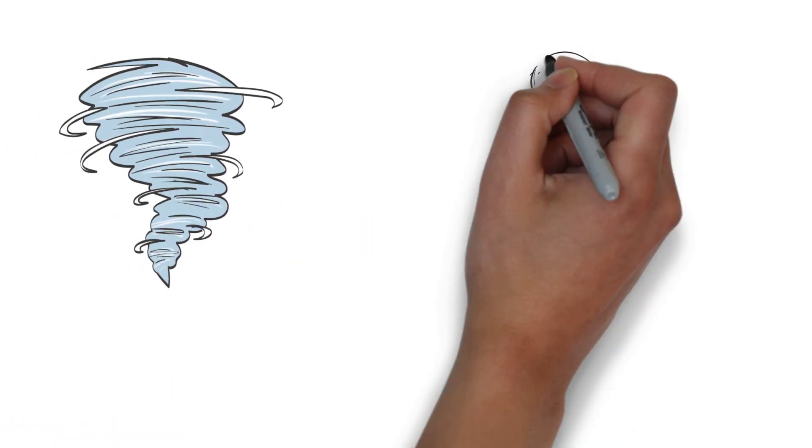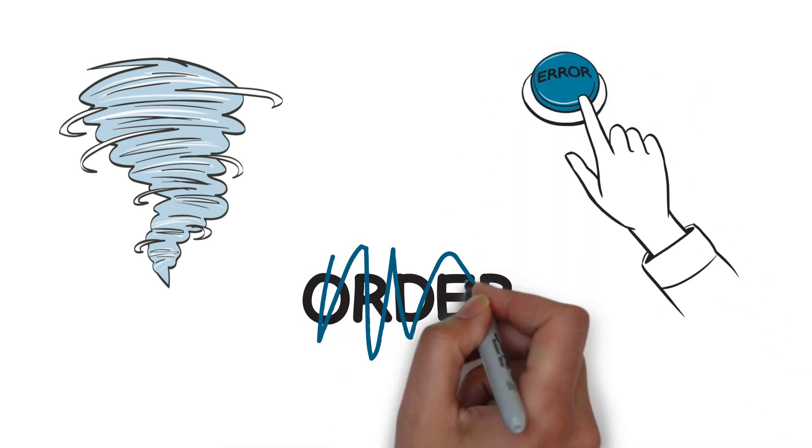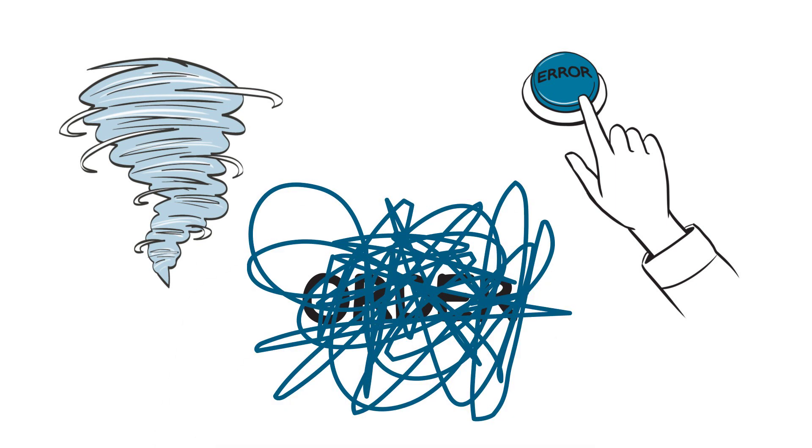But from natural disasters to human error, not everything is within your control. Operations can go from order to chaos in a matter of seconds.